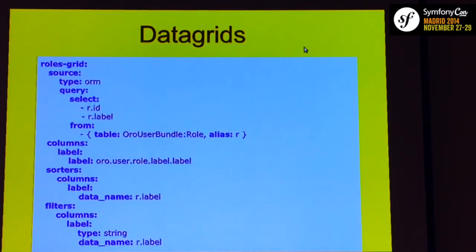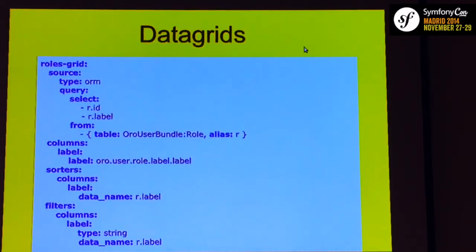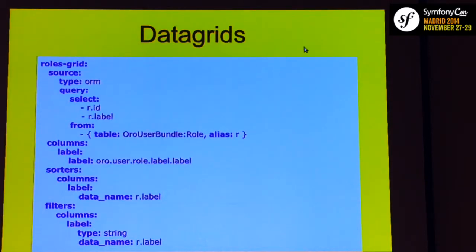The sections of configuration are quite simple. First, you specify a source to grab data from your backend — you can specify a source type, which by default is ORM. Then specify a query used to collect data from the database, which is a plain representation of the Doctrine QueryBuilder. You can add select, from, where, and whatever conditions you want. Then define the columns you want to see on your grid. Sorters and filters are both optional, but it's a great experience to allow users to handle information in the best way.